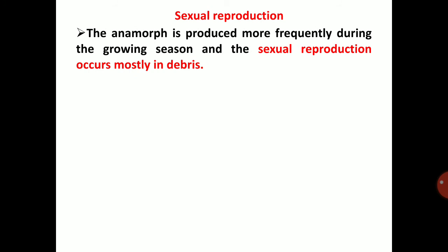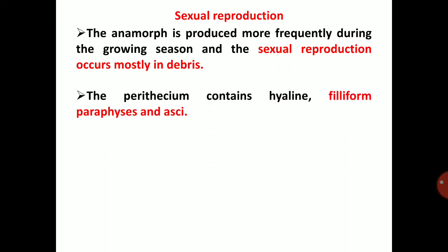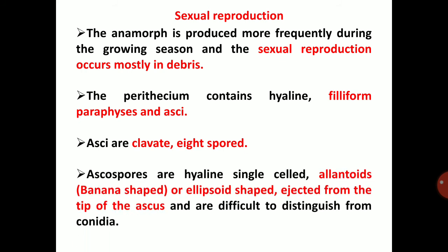In sexual reproduction, the teleomorph is produced more frequently during the growing season, and sexual reproduction occurs mostly in debris — that is, unfavorable conditions or resting period. The perithecia contain hyaline, filiform-shaped paraphyses and asci. Asci are clavate and eight-spored. Ascospores are hyaline, single-celled, allantoid — that is banana-shaped — or ellipsoid-shaped, ejected from the tip of the ascus, and are difficult to distinguish from conidia.